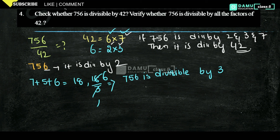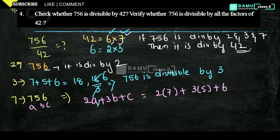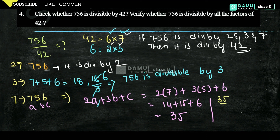Next condition is checking 756 with the divisibility rule of 7. We write the number in the format ABC from left side, where the condition is 2A plus 3B plus C. So 2 into 7 plus 3 into 5 plus 6 gives us 14 plus 15 plus 6. That is 14 plus 6 equals 20, and 20 plus 15 equals 35. Then 35 is divisible by 7 — 7 fives are 35 — so 756 is divisible by 7.